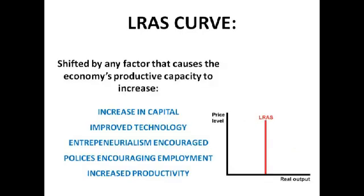Moving on now to the LRAS curve. Long-run aggregate supply is the economy's productive capacity — its ability to produce goods or services — and it can shift. It tends to be shifted by factors that cause the economy's productive capacity to increase. The LRAS potential occurs at the natural rate of unemployment rather than full employment, because full employment means everyone is being employed, which simply isn't viable. There are always going to be some workers that prefer to stay on benefits. The natural rate of unemployment is the rate consistent with a stable rate of inflation, and it's really important to make that distinction.